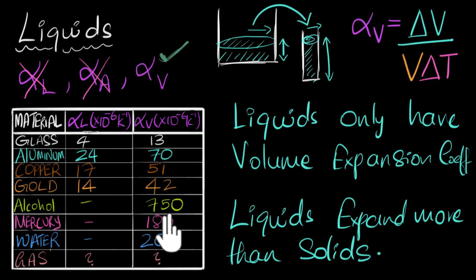But look at the value of alpha V for alcohol. It's significantly higher than that of mercury. Which means if you were to put alcohol inside glass, that would be even better thermometers. And we use that. Chances are that the thermometer that you may have used in your school laboratories are indeed alcohol thermometers.